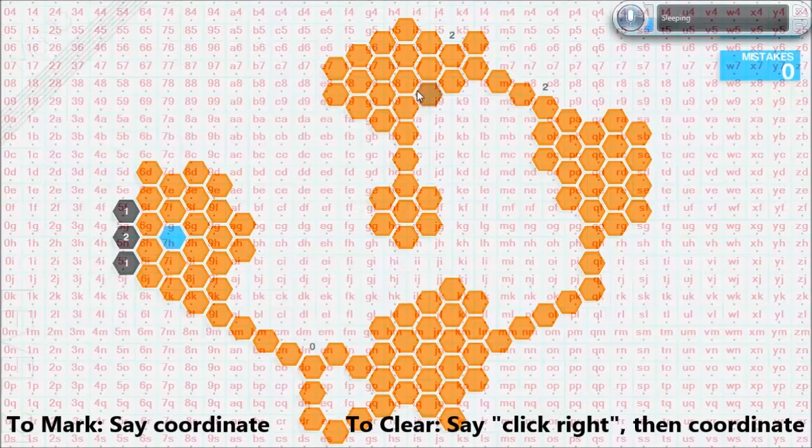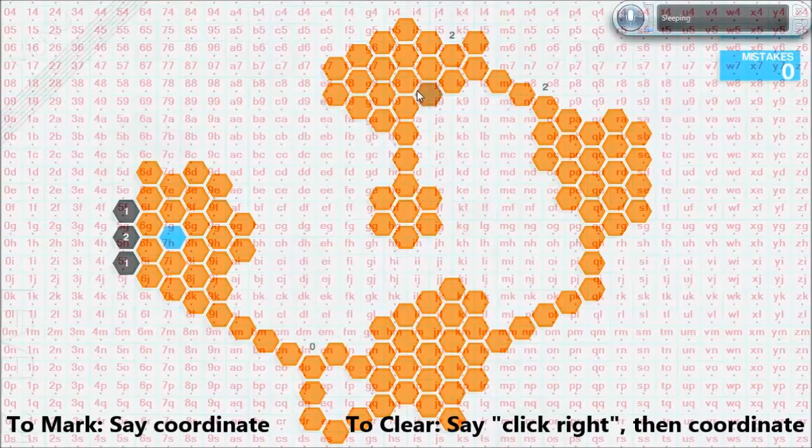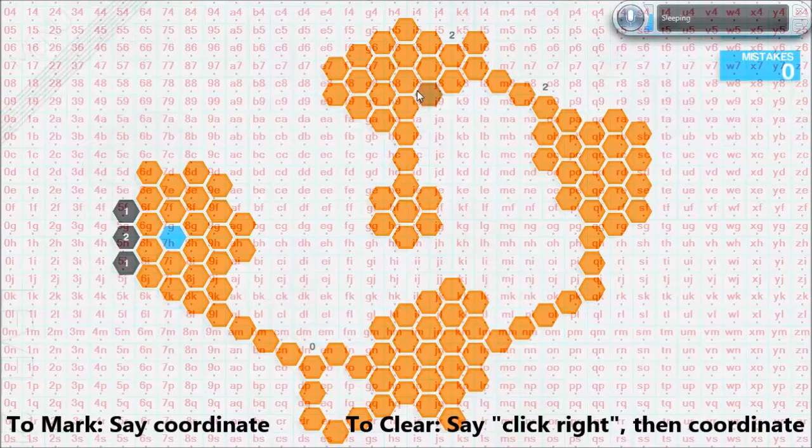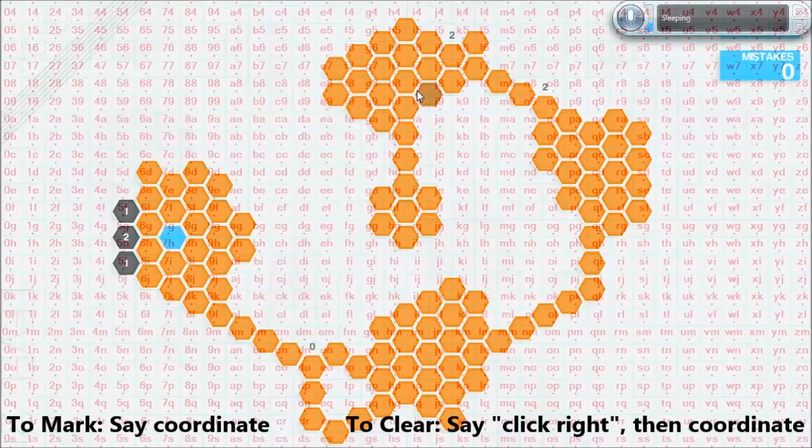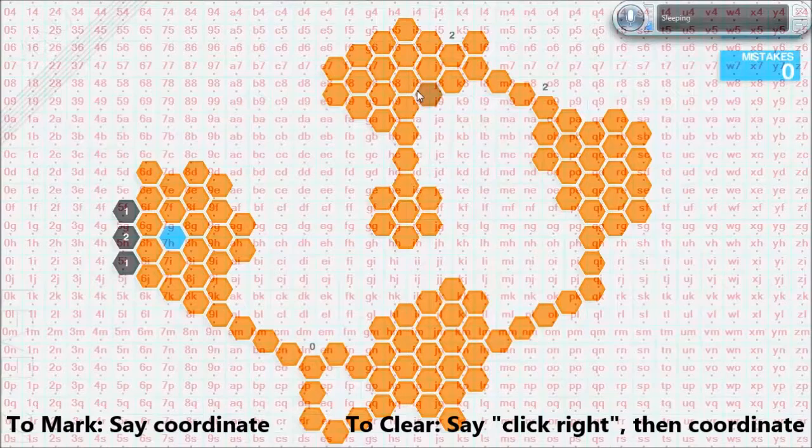Now you'll notice here that there's a hexagon between H7, I7, H8, and I8 which isn't covered by the grid.